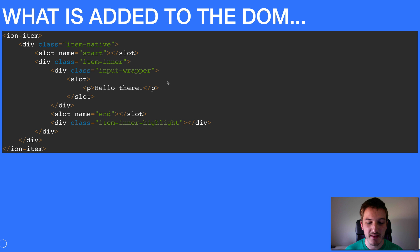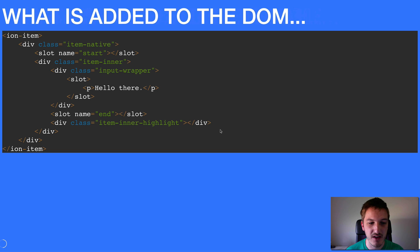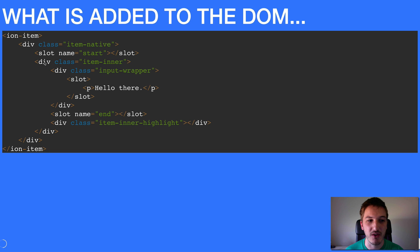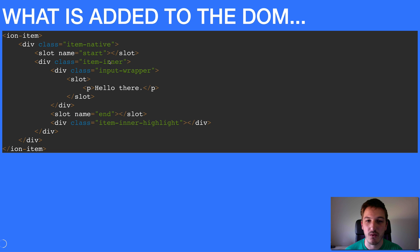The basic idea behind Shadow DOM is that it creates a separate DOM that is protected from interference from the rest of the application. In the case of this ion-item, everything inside it would be in its own Shadow DOM. Not every Ionic component uses Shadow DOM, but the ones that do have their internals protected. In Ionic 3, if you wanted to do specific styling you could see that item-inner was doing something you wanted to change, and you could just create a CSS selector to target item-inner and modify styles as you pleased.